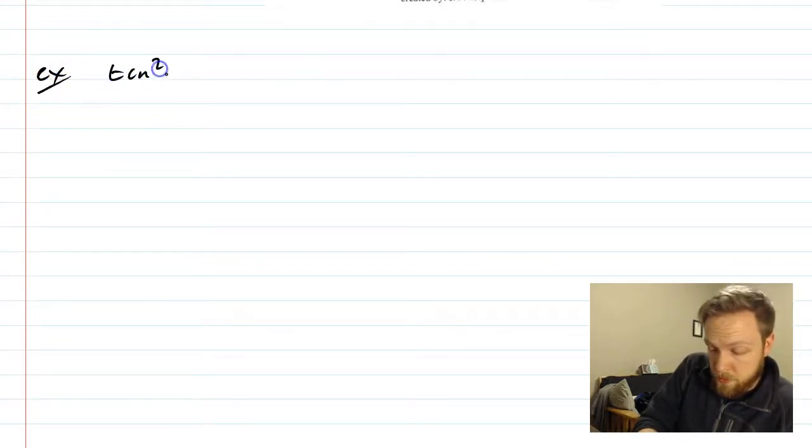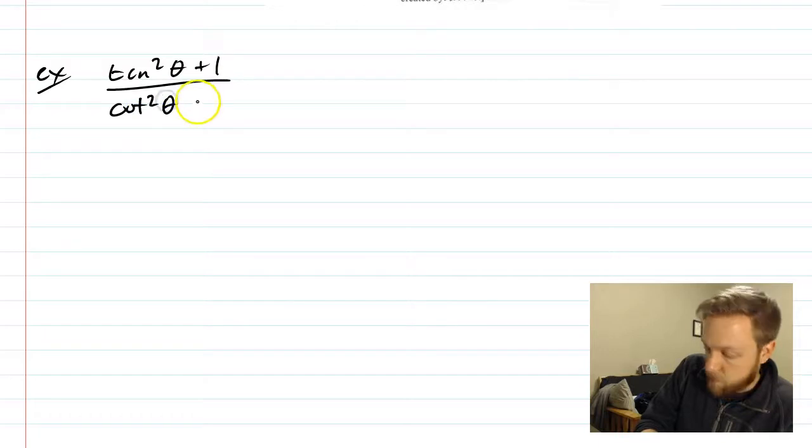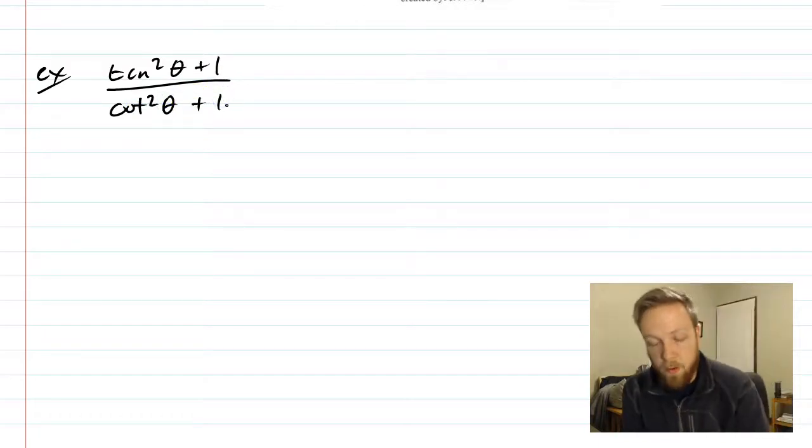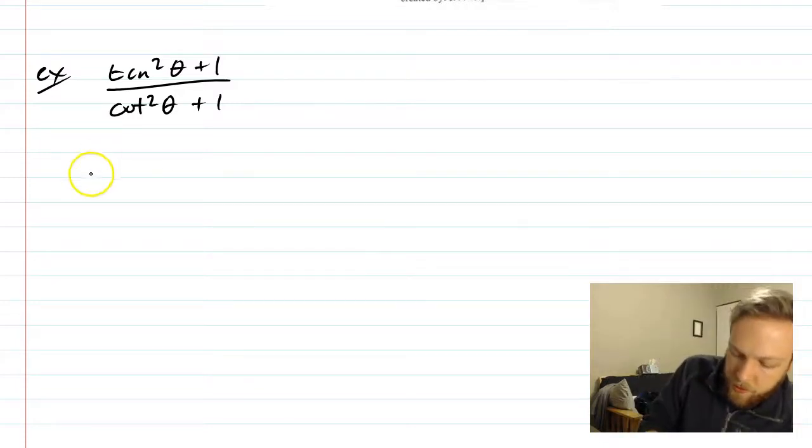So the first one here, we're going to just go through three here: tan squared theta over cotangent squared theta plus one. So this one's nice because we have Pythagorean identities everywhere.